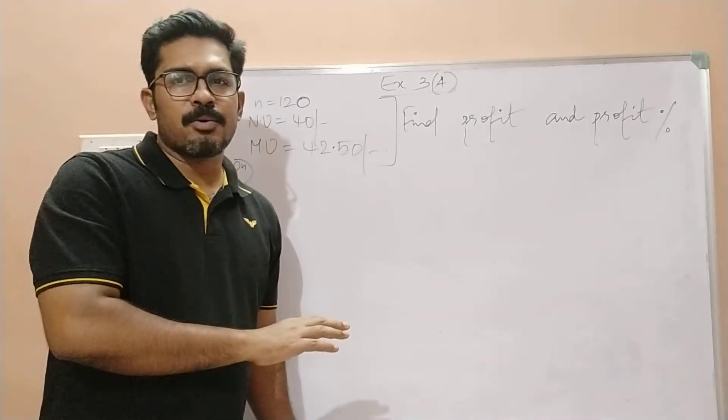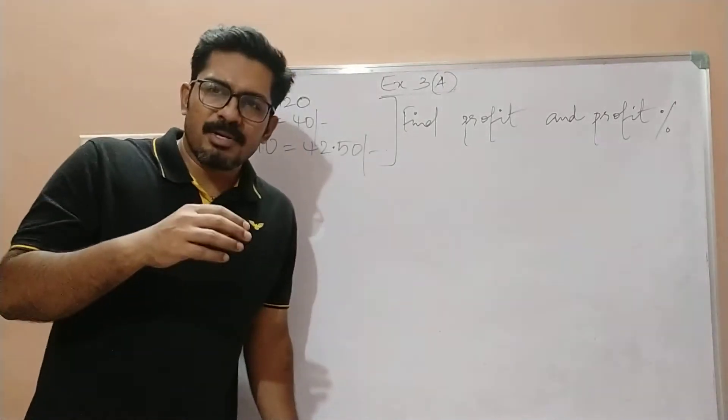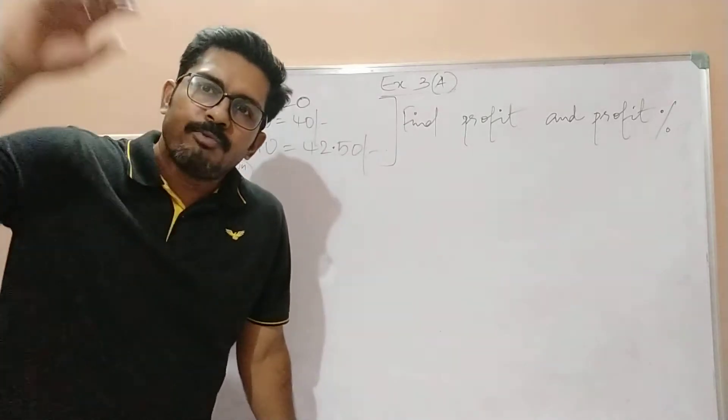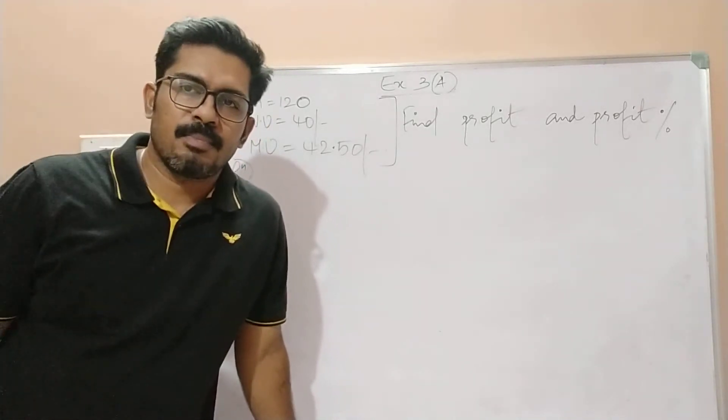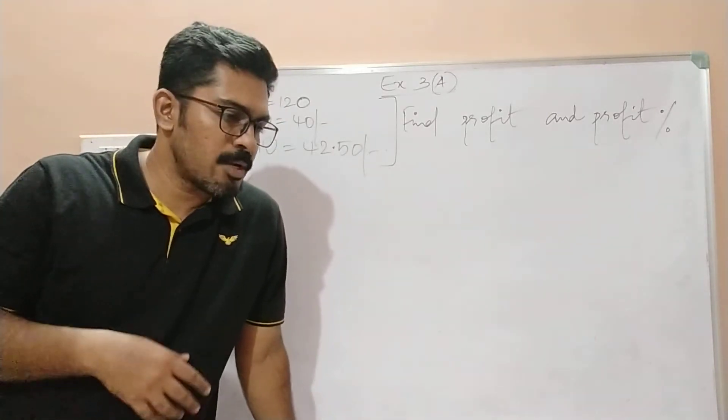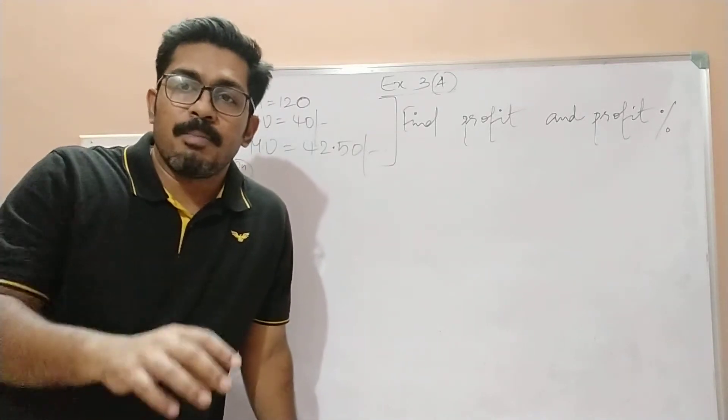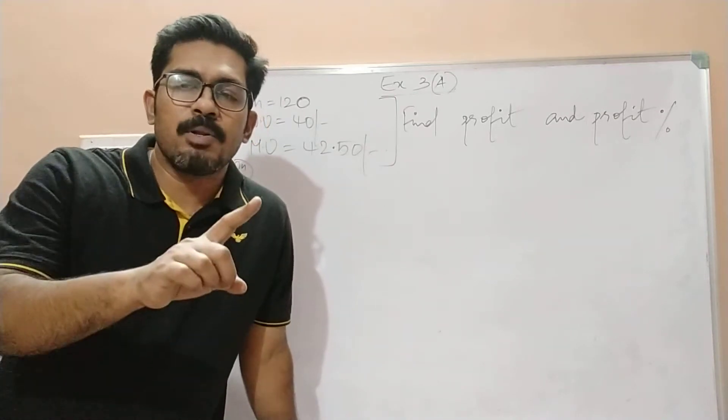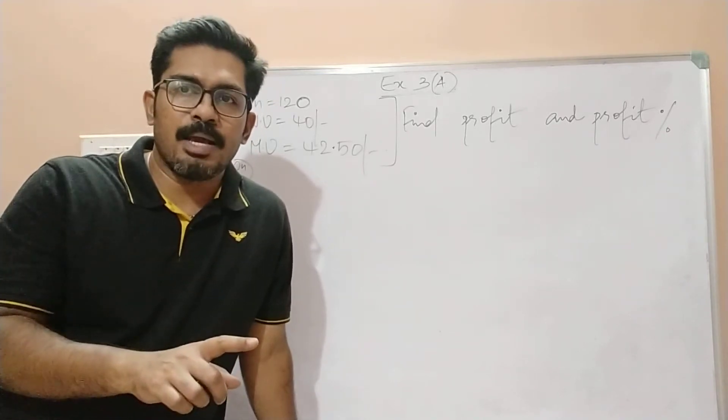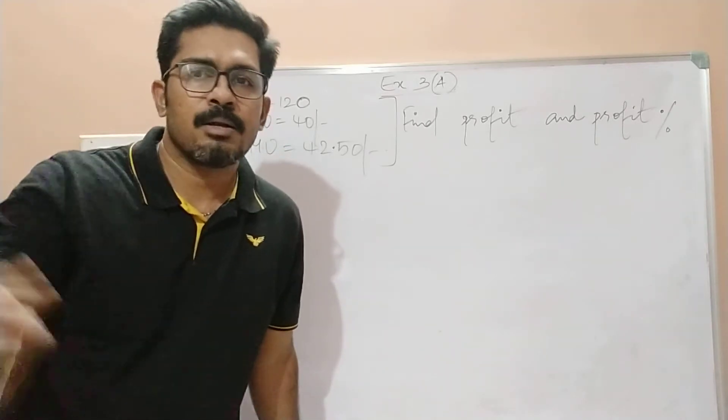You have to find out the profit as well as the profit percentage. Children, you can actually compare this sum with a normal profit and loss sum. Imagine you bought 120 eggs - eggs are not so costly. I cannot say that one egg is equal to 40 rupees. For example, I bought 120 apples because apples are usually costly. So imagine I bought 120 apples where one apple cost me 40 rupees.